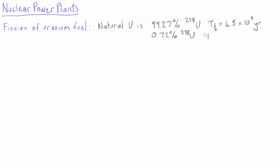Most nuclear power plants around the world use the fission of uranium fuel. Natural uranium is a mixture of two different isotopes. 99.27% of natural uranium is uranium-238, with a half-life of 4.5 billion years. The other 0.72% is uranium-235, with a half-life of 704 million years.